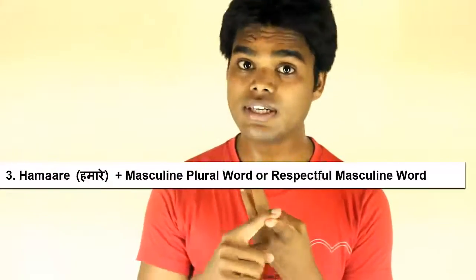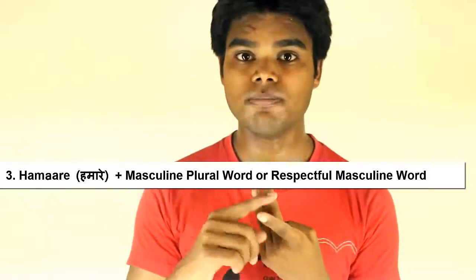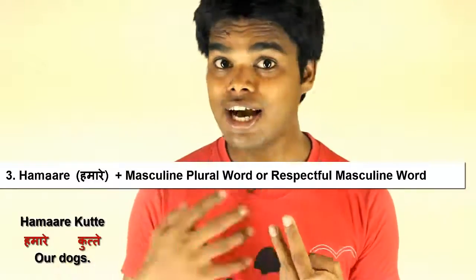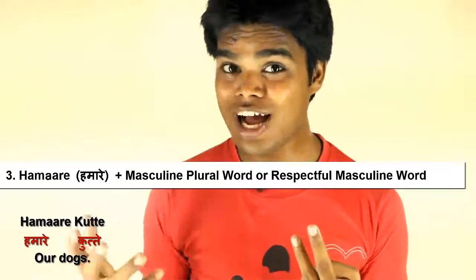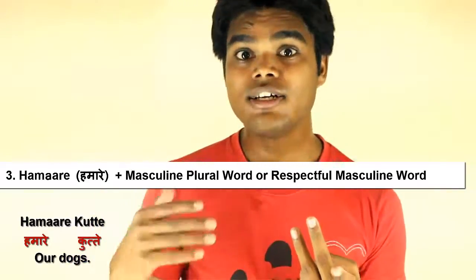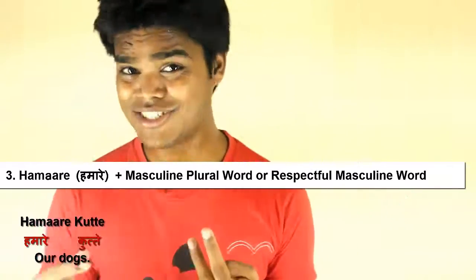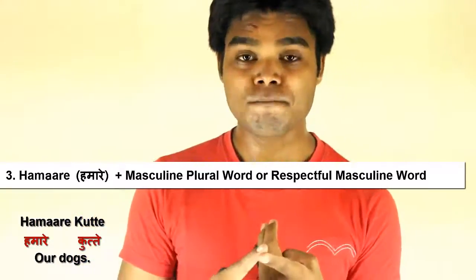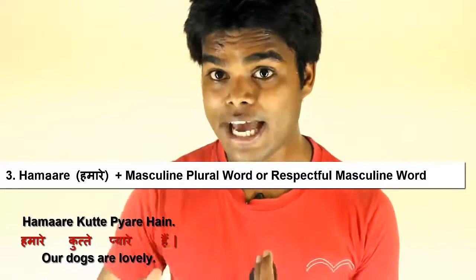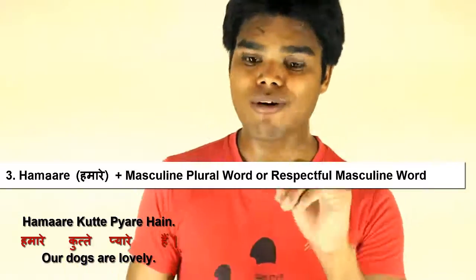The third form, 'hamare,' is used for plural masculine. For example, 'kutta' means dog — 'hamara kutta' is 'our dog.' But when you make it plural, 'kutte,' you say 'hamare kutte.' So 'hamare kutte pyaare pyaare hain' means 'our dogs are lovely.'